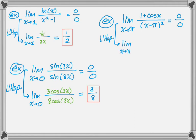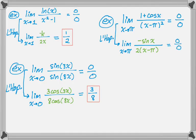Applying L'Hôpital's Rule, still the limit as x approaches π. The derivative of 1 is 0, and the derivative of cos(x) is −sin(x). That's over the derivative of (x − π)², which by the chain rule is 2(x − π) times the derivative of (x − π), which is 1. Trying to re-evaluate: sin(π) is 0, so I get 0 over 0 again. That means I need to apply L'Hôpital's Rule a second time.